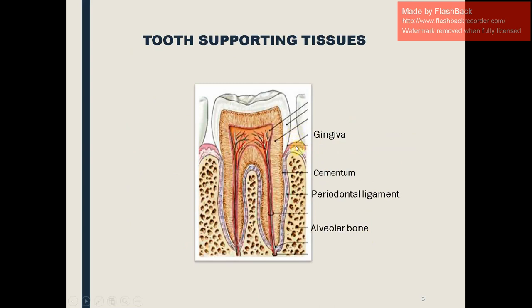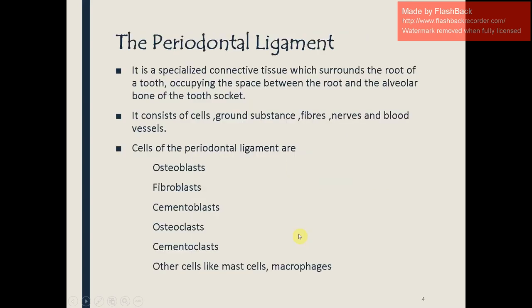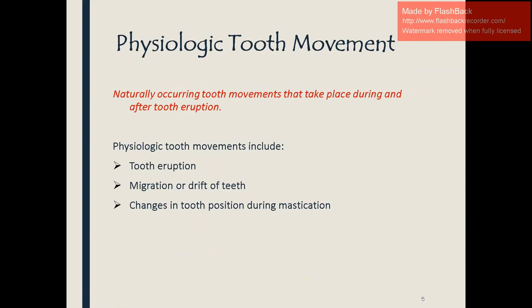The basic tooth supporting tissues include the gingiva, the cementum around the root, the periodontal ligament between the root and the alveolar bone, and the alveolar bone itself. The periodontal ligament is a specialized connective tissue surrounding the root, occupying the space between the root and the alveolar bone. It consists of cells, ground substance, fibers, nerves, and blood vessels. Cells present include osteoblasts, fibroblasts, cementoblasts, osteoclasts, mast cells, and macrophages. Osteoblasts are bone-forming cells and osteoclasts are bone-resorbing cells — these are critical for bone remodeling.